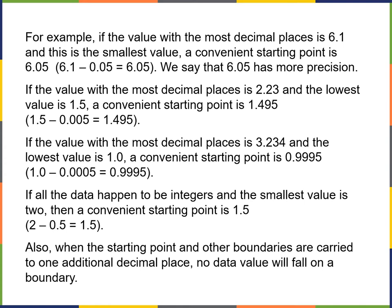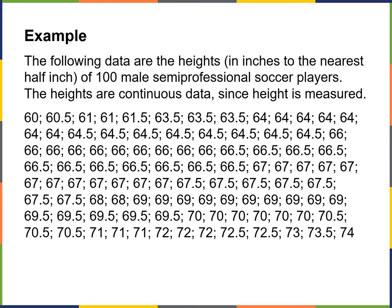When the starting point and other boundaries are carried to one additional decimal place, no data value will fall on a boundary. Here's an example: the following data are the heights in inches to the nearest half inch of 100 male semi-professional soccer players. The heights are continuous data since height is measured.